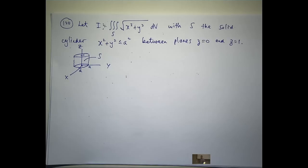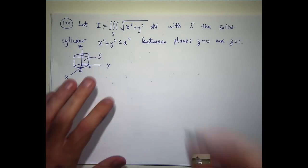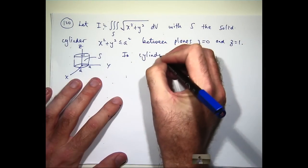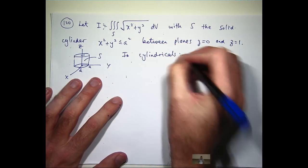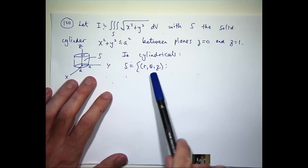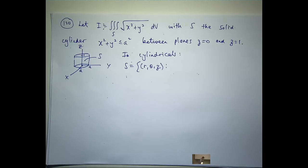but you've also got another variable, a z variable that measures height or depth. The variables for cylindricals are r, theta and z. We just add one extra variable, z, to measure height.